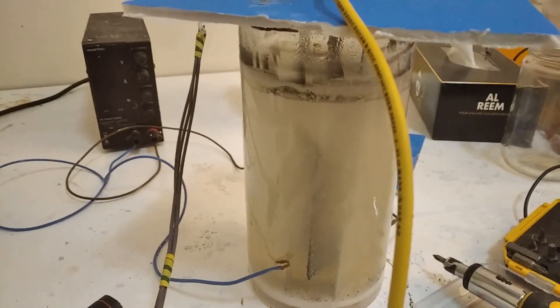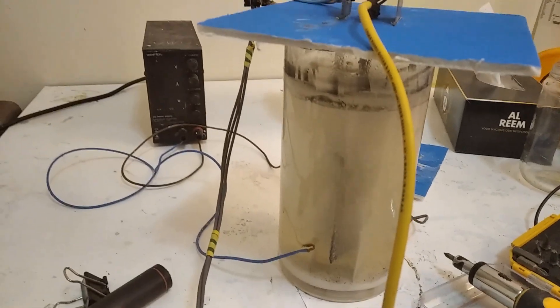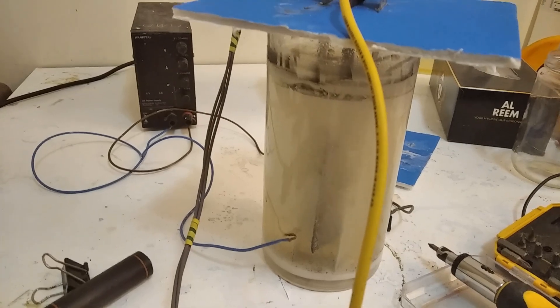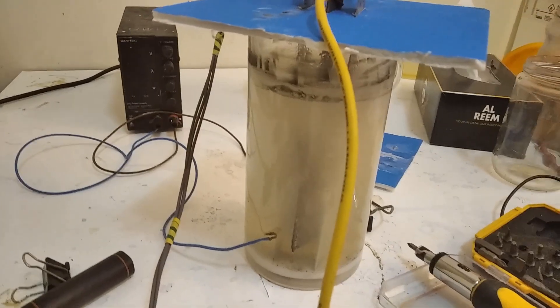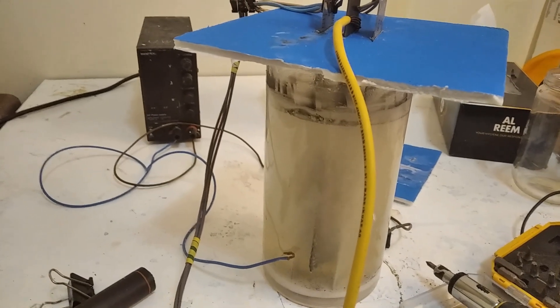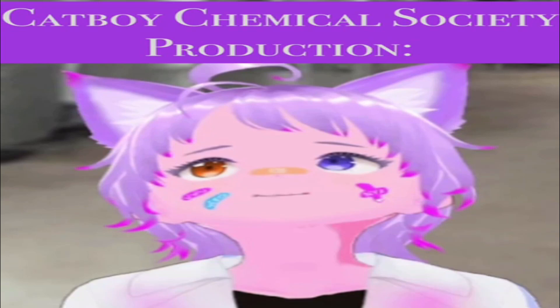So yes, if you use bleach, Clorox bleach, as an electrolyte rather than using pure water, then your lead dioxide electrode works just as great as a mixed metal oxide.